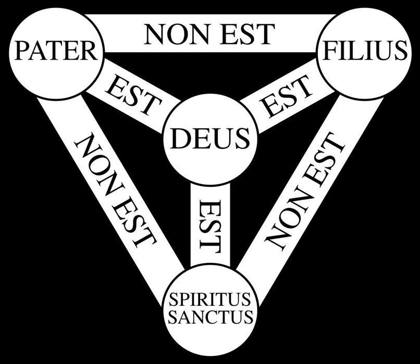The following twelve propositions can be read off the diagram: The Father is God. The Son is God. The Holy Spirit is God. God is the Father. God is the Son. God is the Holy Spirit. The Father is not the Son. The Father is not the Holy Spirit. The Son is not the Father. The Son is not the Holy Spirit. The Holy Spirit is not the Father. The Holy Spirit is not the Son.